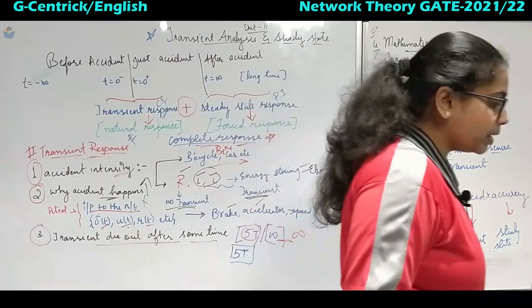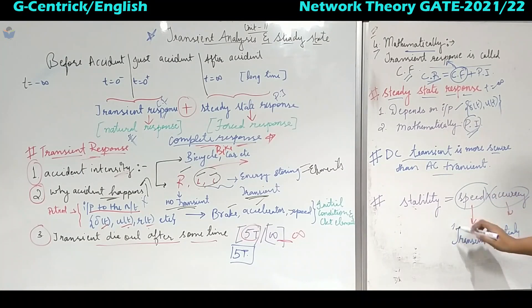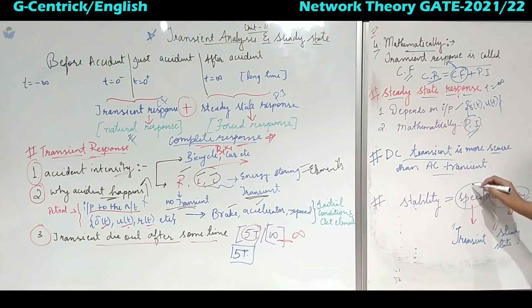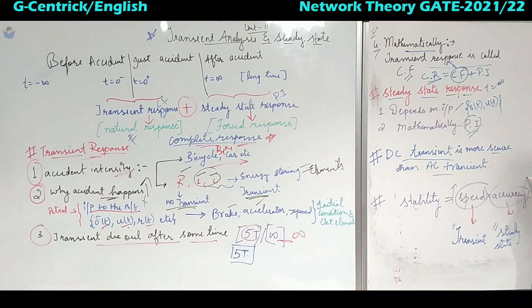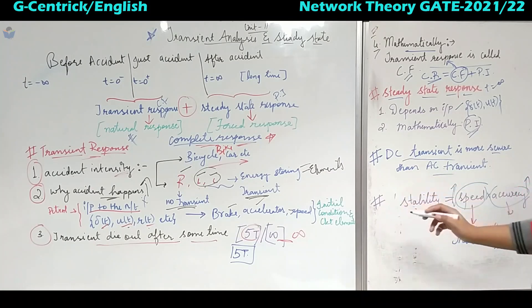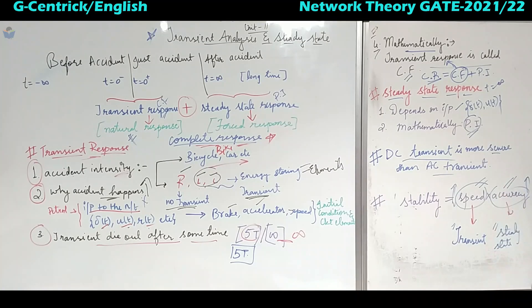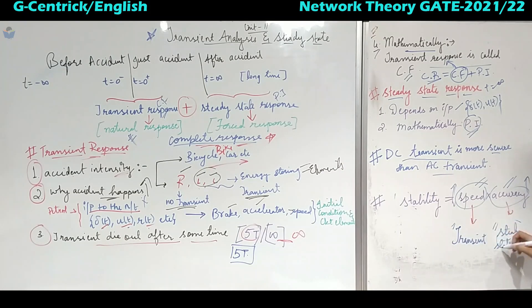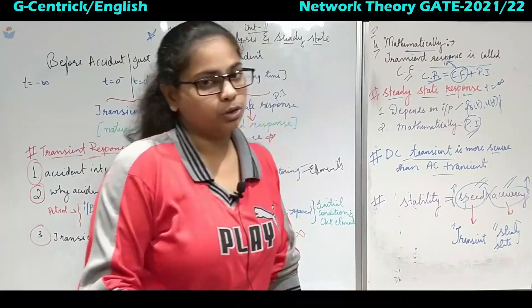The last point is: stability equals speed times accuracy. Speed represents the transient and accuracy represents the steady state. If you increase speed and accuracy is less, stability will be imbalanced. Whenever you increase accuracy and speed is less, again there won't be any stability. To get proper stability, both should be maintained correctly — not too high or too low, but medium for both parameters. So speed into accuracy means transient and steady state should both be normal for good stability.